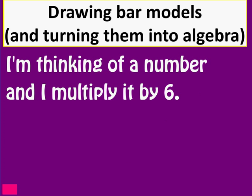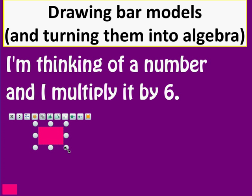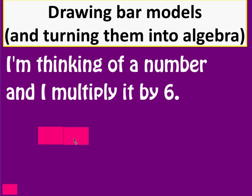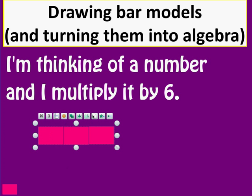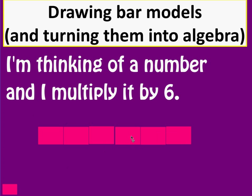Another example: I'm thinking of a number and I multiply it by 6. This rectangle will represent the number that I'm thinking of, and then I multiply it by 6. So that's what a bar model would look like if I had a number that I then multiplied by 6.